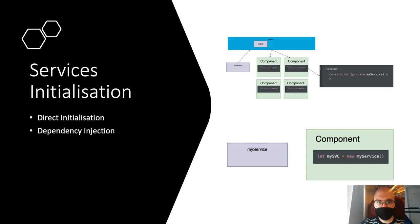Dependency injection works differently: we register our services with Angular, and Angular creates a single instance called a singleton, holding it and sharing it across different components. Angular provides a built-in injector responsible for injecting this instance into components. When a component needs a service, it calls that service through its constructor and gets the instance automatically.